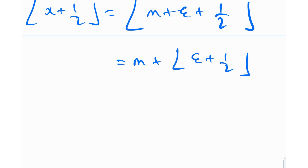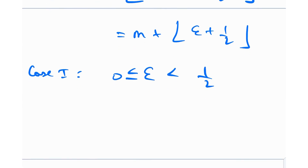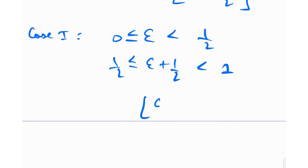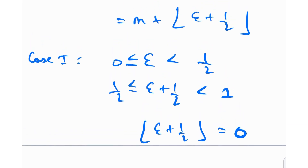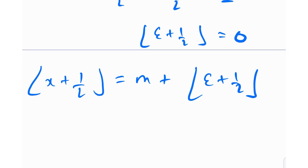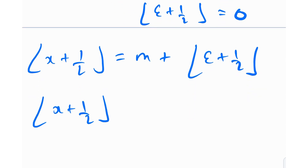Now let's analyze two cases. Case 1: ε is between 0 and 1/2 (not including 1/2). In this case, ε + 1/2 is between 1/2 and 1, so floor(ε + 1/2) = 0 — it's something like 0.7 or 0.8, so the floor is zero. Therefore floor(x + 1/2) = m + 0 = m.